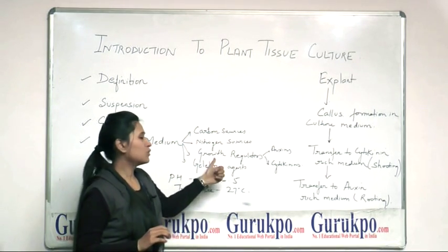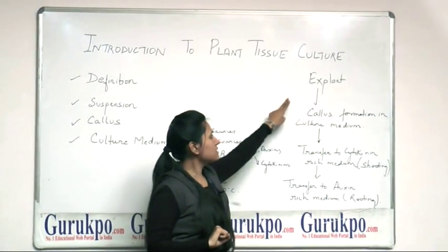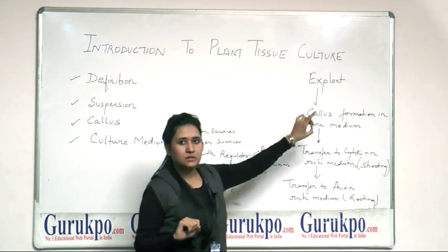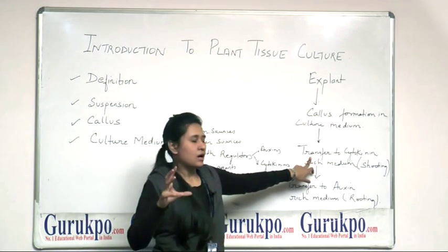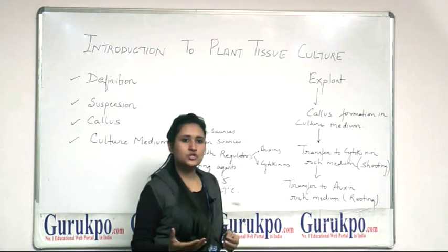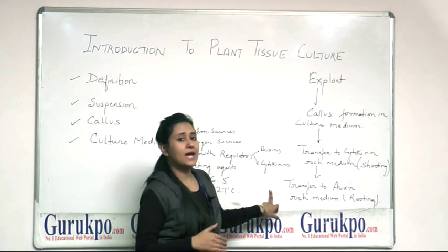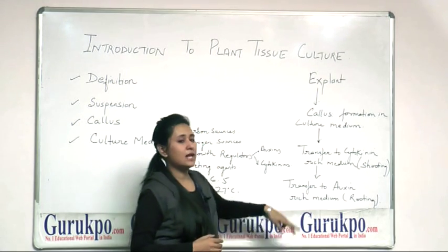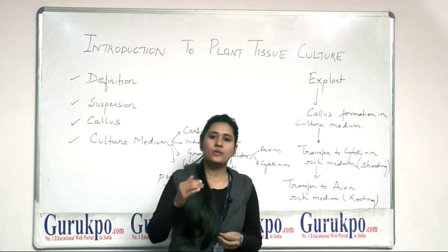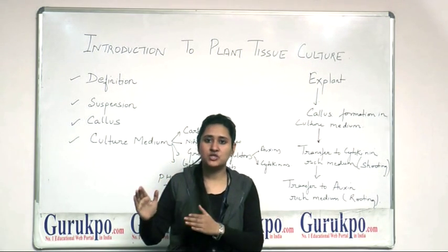Now, what is the exact mechanism in plant tissue culture? We take an explant, which is then allowed to grow in the culture medium, and callus formation takes place. That callus is then transferred into a medium containing a rich amount of cytokinin, where the shoot will appear — a process called shooting. Then that shoot is transferred into a medium with a high amount of auxin, which helps in the development of roots. When both shoot and root develop, the plant is taken out into the field where it undergoes hardening. This is how a small plantlet is formed from one major plant source.